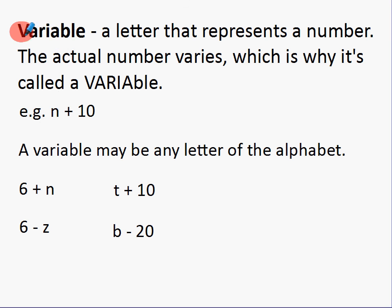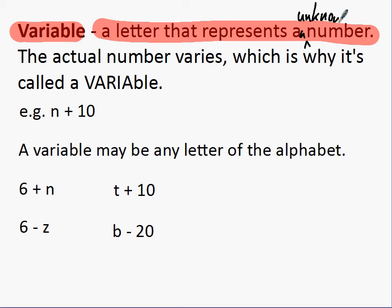A variable is just really a letter that represents a number, and it's usually an unknown number. The actual number can vary which is why it's called a variable. Here's an expression and in that expression we've got this letter n being used to represent the number. We don't know what the value is at this stage, it doesn't even matter, but it represents an unknown number.